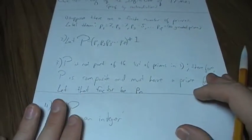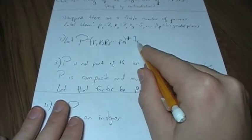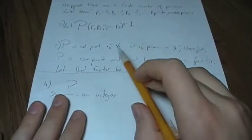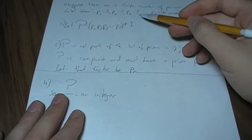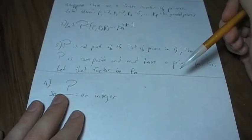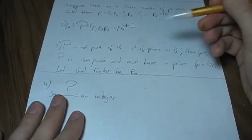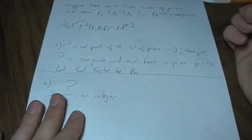Okay, so Euclid says, take all of the primes, multiply them together, and add 1. And let's call that capital P. Now, since capital P is not part of this list of primes, that must mean it's composite. And since it's composite, it must have a prime factor. Let's let that factor of capital P be P sub n.